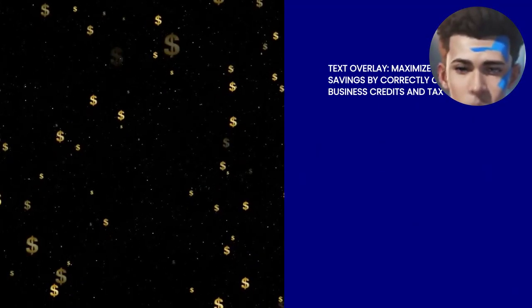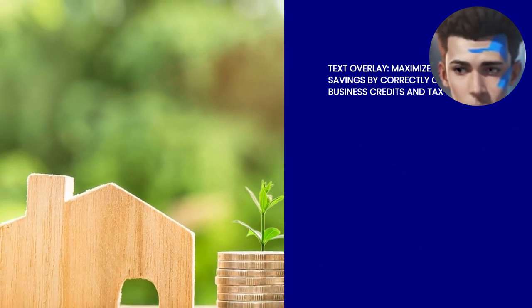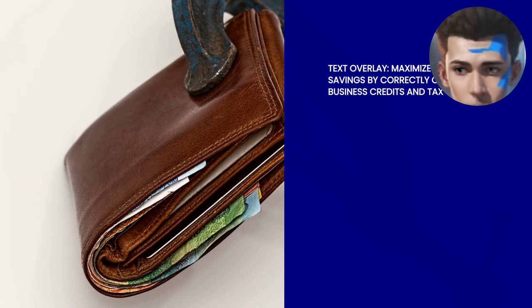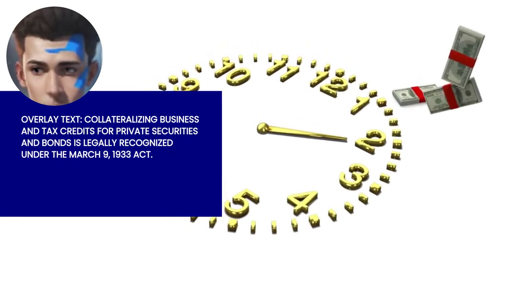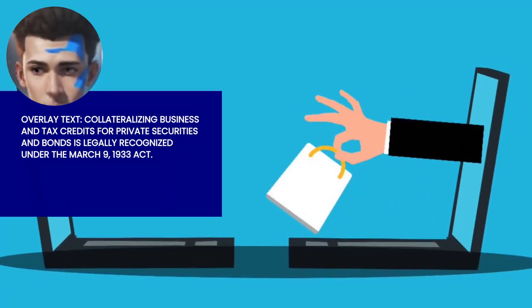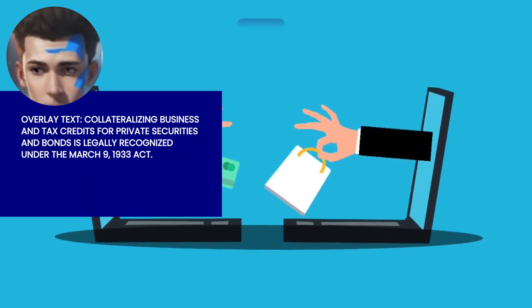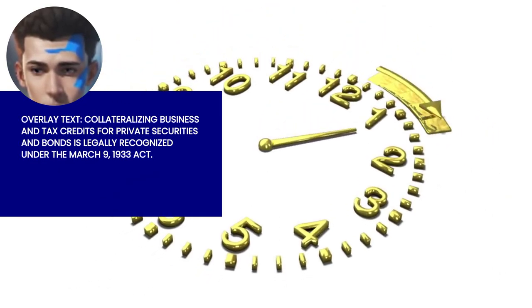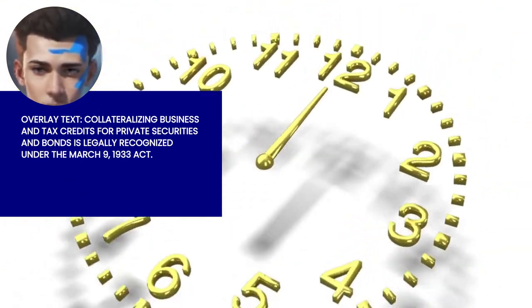We've explored the world of tax credits and business bad debts. Remember, if you're the recipient of business credits and tax credits, you can receive refunds for the taxes you pay during the year by correctly writing off the credits. You can also use your business credit and tax credit as collateral for private securities and bonds. Under the March 9, 1933 Act, eligible papers — which include notes, bonds, and securities — can be collateralized, as recognized by courts and legal definitions.